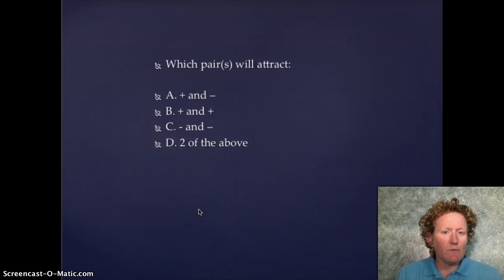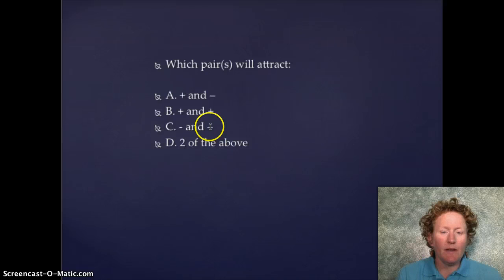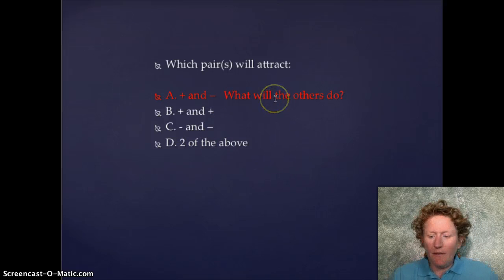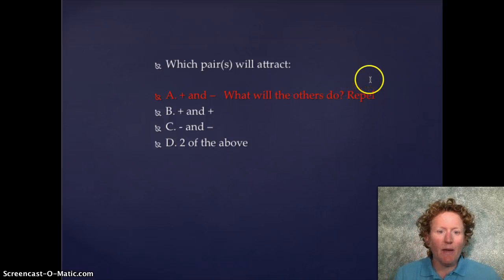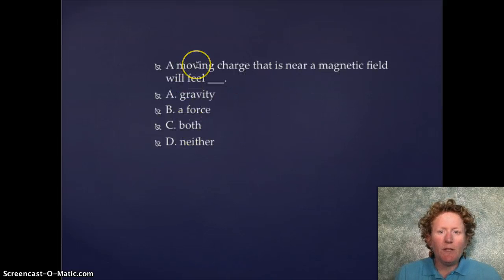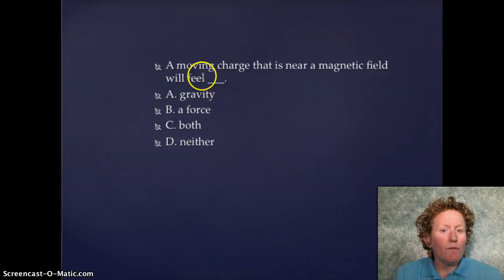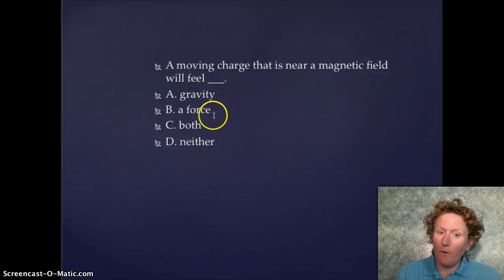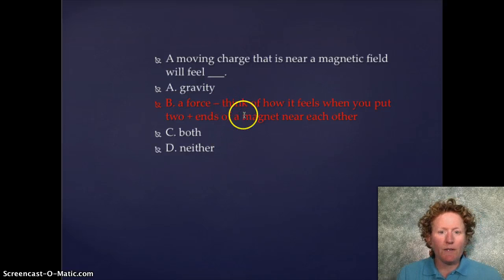Which pairs will attract? Positive and negative, positive and positive, or negative and negative? If you said positive and negative, you're right. The others — plus-plus and negative-negative — repel. A moving charge near a magnetic field will feel a force.